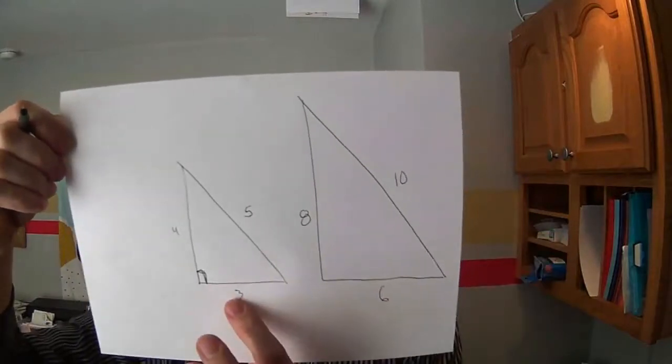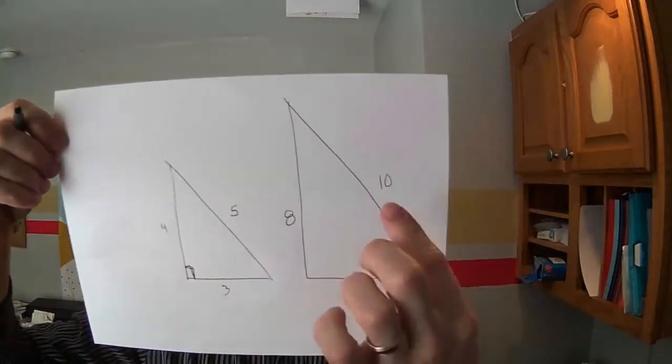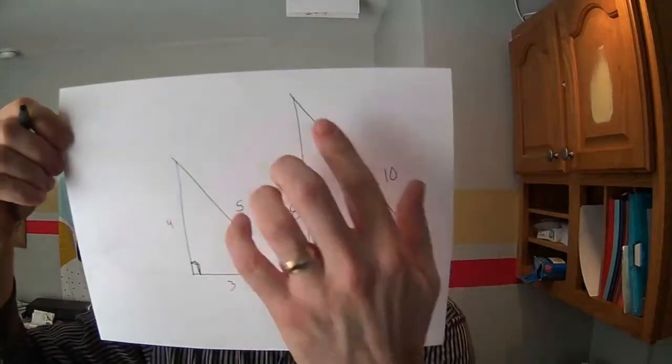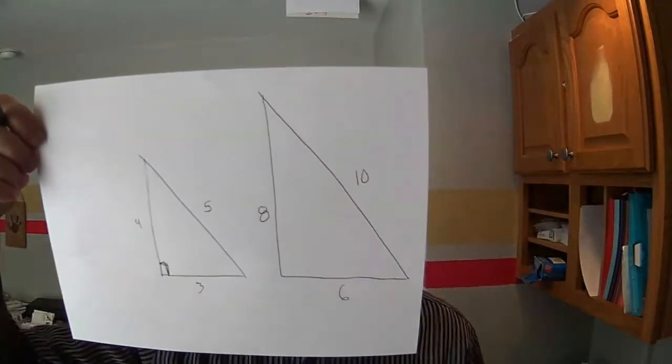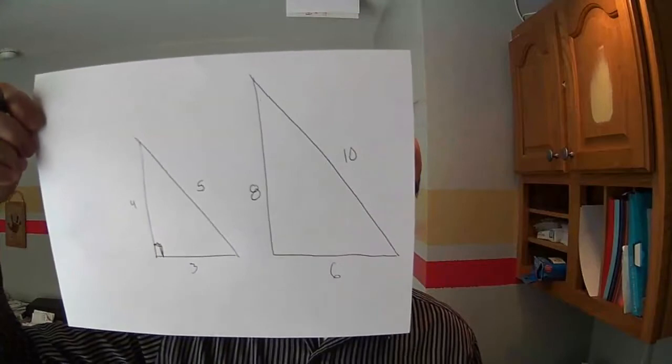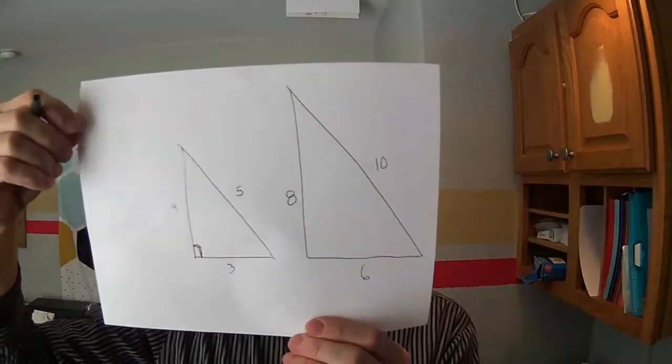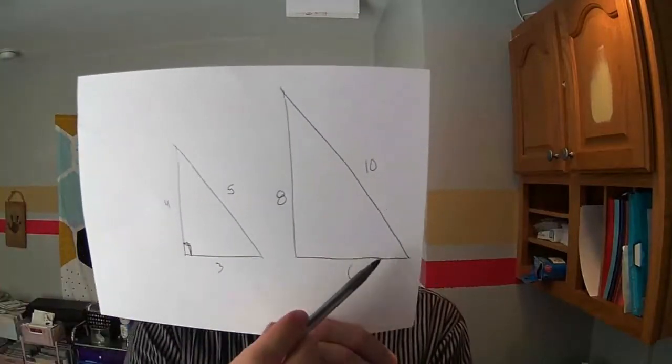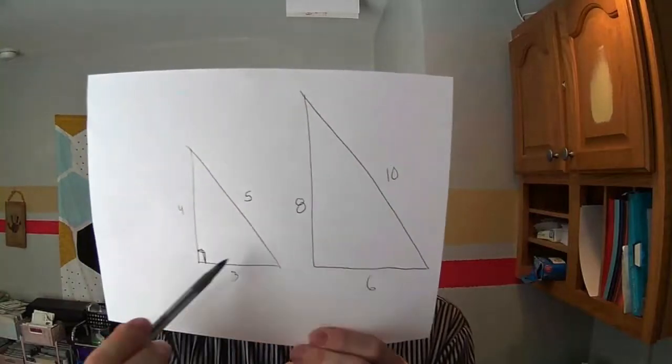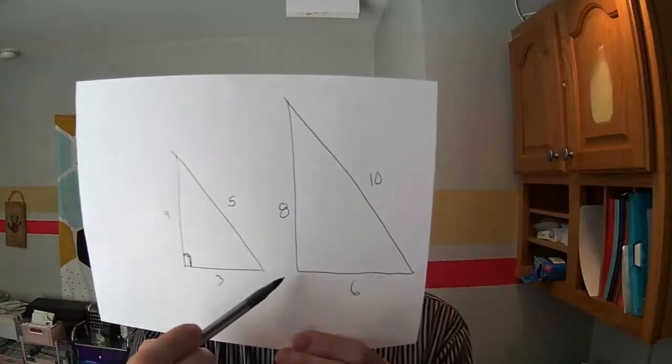So, if I were to make each side of my 3, 4, 5 triangle twice as long, as you see here, this is 6, twice as big as 3, or 8, twice as big as 4, and likewise. If I were to make it twice as big, I scaled it up by a factor of 2. If I do that, the cool thing is the angles are still the same. We call these similar triangles, and it means their angles are still the same.